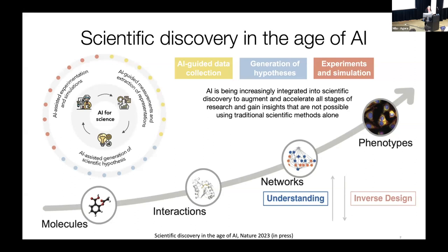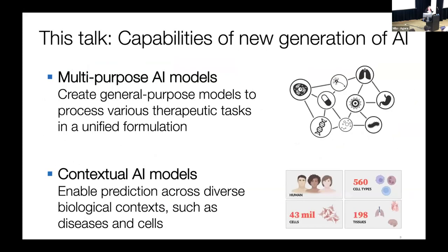Progress is being made across different scales. We've heard today from earlier speakers on exciting directions in modeling individual molecules or molecular complexes. In addition, there's a lot of interest in modeling interactions that give rise to networks and ultimately phenotypes at the molecular, cell level, or entire human bodies. This process is two-directional: we want to increase understanding and drive scientific discovery, and eventually apply novel mechanisms in inverse design.